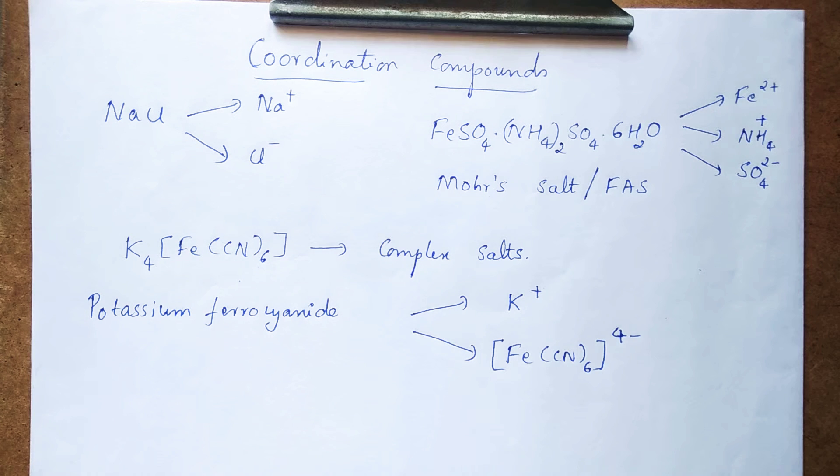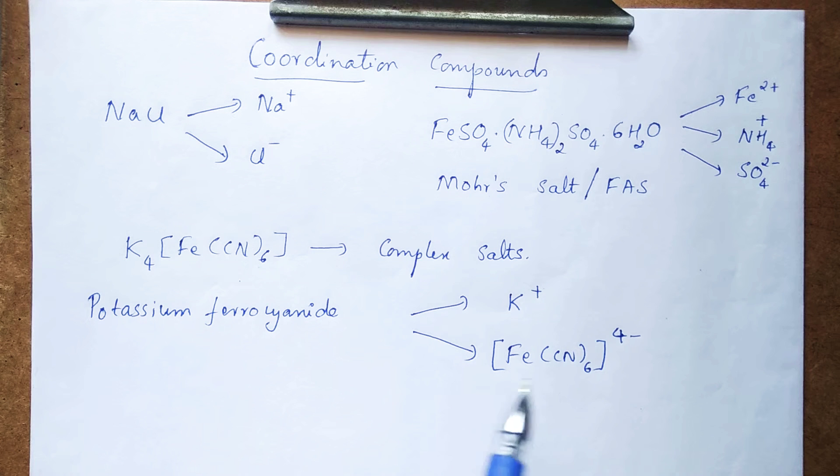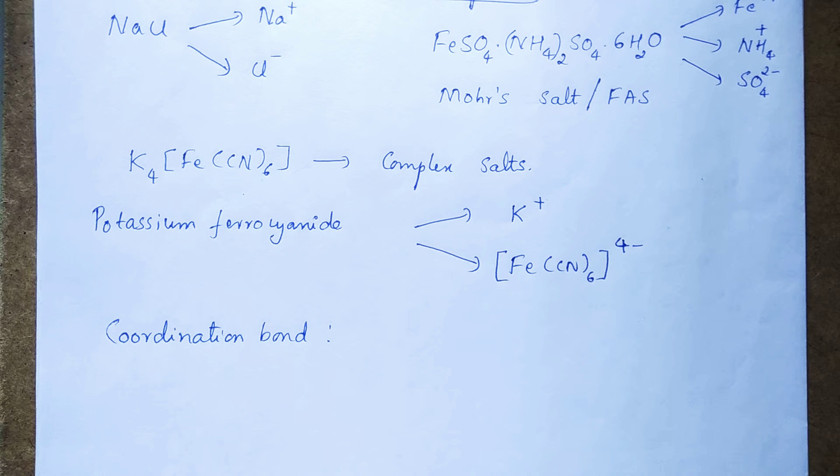But why is it so? The reason for this behavior is presence of very strong coordination bond between cyanide ions and Fe2+ ions. So even when you try to dissolve potassium ferrocyanide in water, the presence of strong coordination bond between iron and cyanide does not allow it to undergo dissociation.